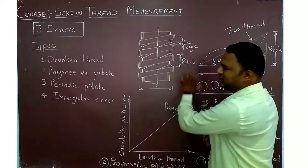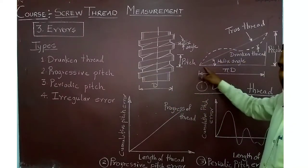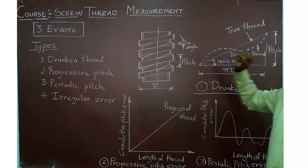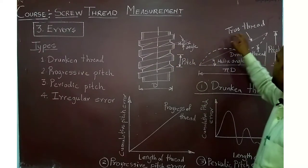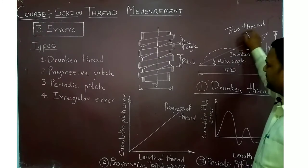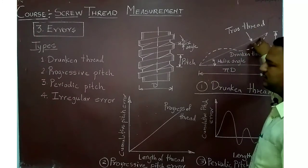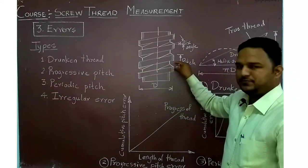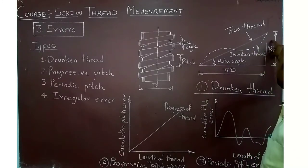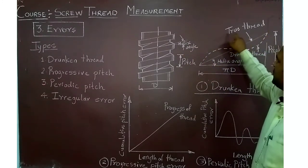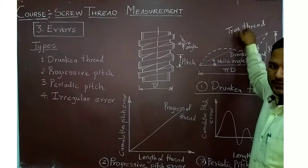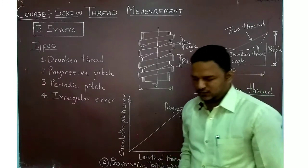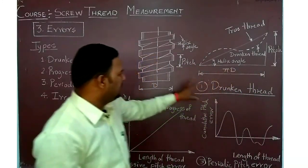If you develop one thread, the horizontal axis will be π·d and the height will be the pitch. In the ideal form, it must have a true thread — a straight line — which when rolled becomes one thread of the helix. Instead of a true thread, in the case of drunken thread error the profile will be wavy, meaning a true helix is not obtained.